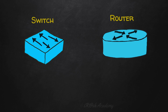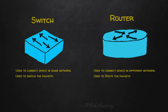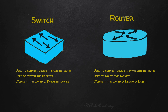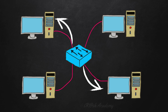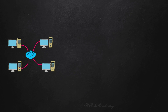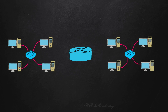The network switch and router perform different functions in computer networks. A switch helps in the communication of devices in the same network, and a router helps in the communication of devices from different networks. A switch is used to switch packets, and a router is used to route packets. The switch works at layer 2, the data link layer of the OSI model, based on MAC addresses. The router works at layer 3, the network layer of the OSI model, based on IP addresses. When devices are connected to a switch in the same network, they can communicate together.